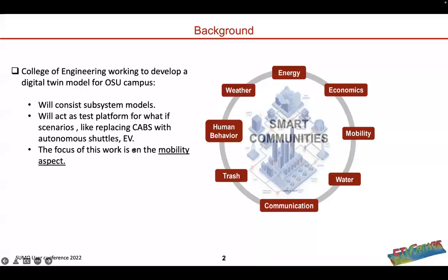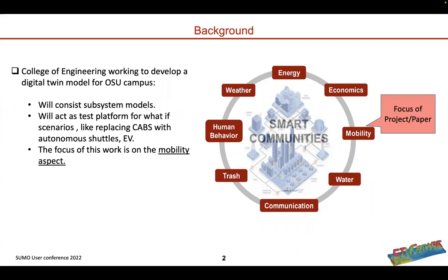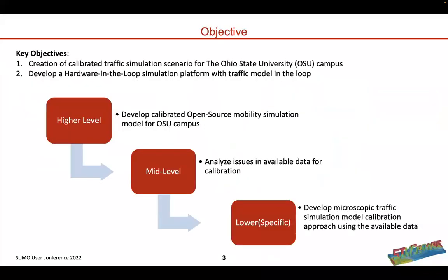I will start with the background for this particular work. The College of Engineering at Ohio State University is working to develop a digital twin model for the OSU campus, which will have multiple subsystem models like energy, economics, mobility, human behavior, trash, and communication. The focus of this particular work was on the mobility aspect. This test platform will help in replacing CABs — the campus area bus shuttles — with autonomous shuttles or EVs. The key objective was to create a calibrated traffic simulation scenario for the OSU campus and develop a hardware-in-loop simulation platform with a traffic model in the loop.